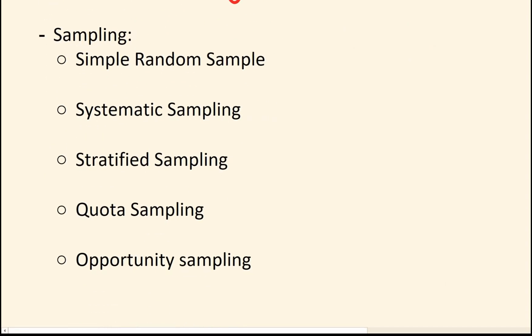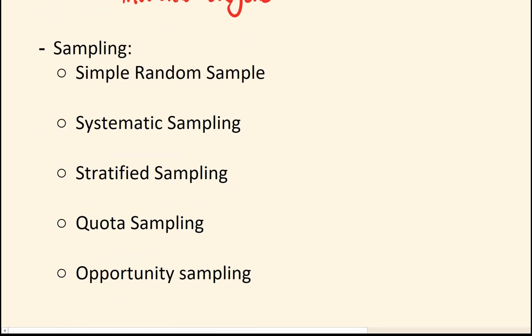Let's look at sampling. So sampling is a way, rather than do a whole census, you can just look at a smaller group and hope that it represents the overall population. That's always the aim. We have five types that you need to know.